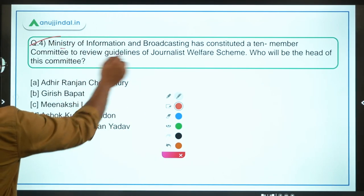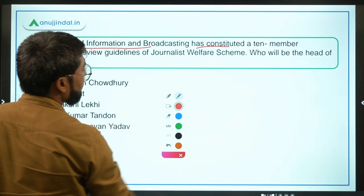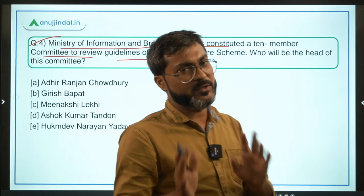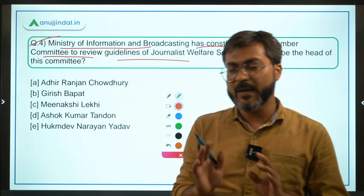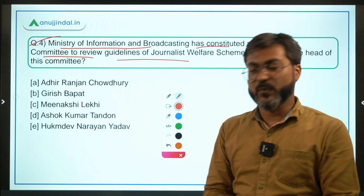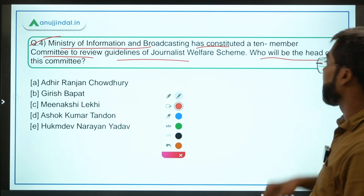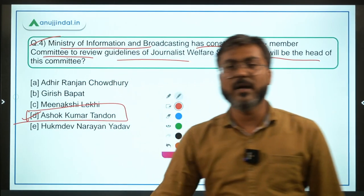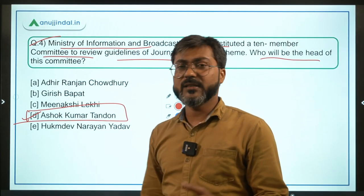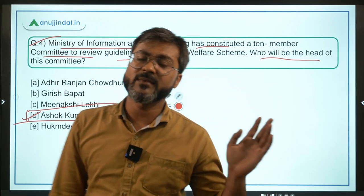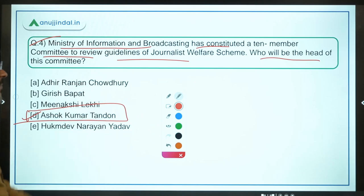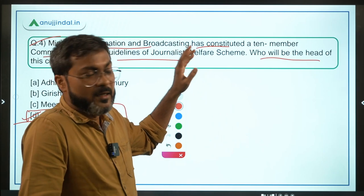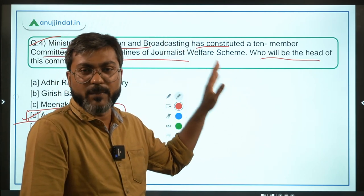Question four: The Ministry of Information and Broadcasting, headed by Anurag Thakur, has constituted a 10-member committee to review the guidelines of the Journalist Welfare Scheme. The details of the scheme are not important for the exam, but the chairman of this committee is important. The correct answer is Ashok Kumar Tandon, who will head this committee.